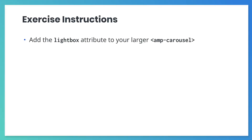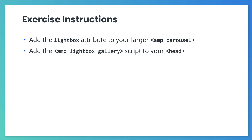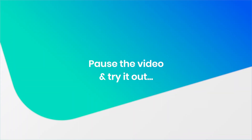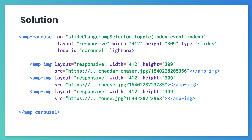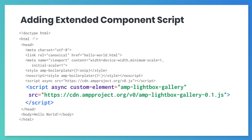Now let's go ahead and do this. Simply add the lightbox attribute to your larger amp-carousel, and then add the amp-lightbox-gallery script to the head. Go ahead and pause this video and try it out for yourself. When you're done, your code should look like this. We just added the lightbox attribute to our amp-carousel — that's it. Don't forget to add the script for amp-lightbox-gallery to the head.